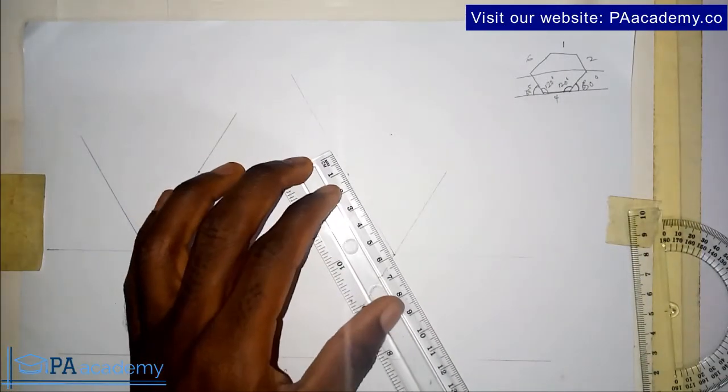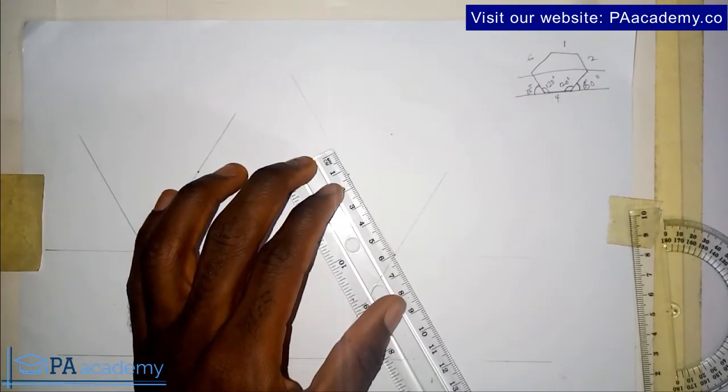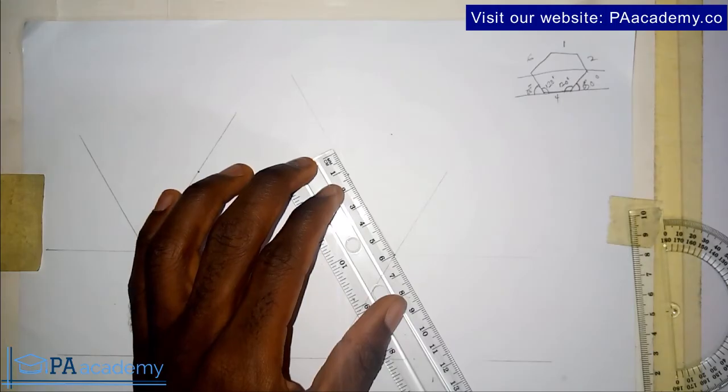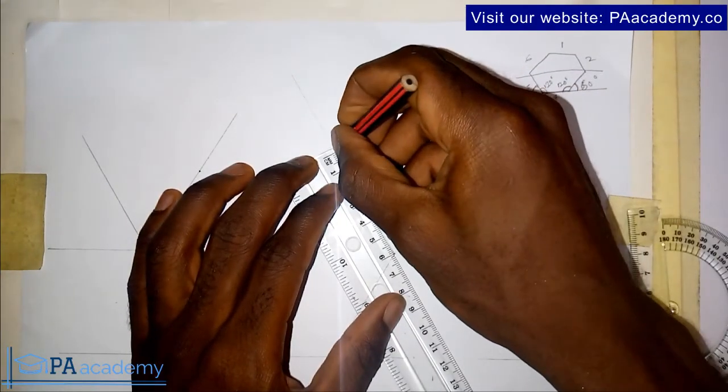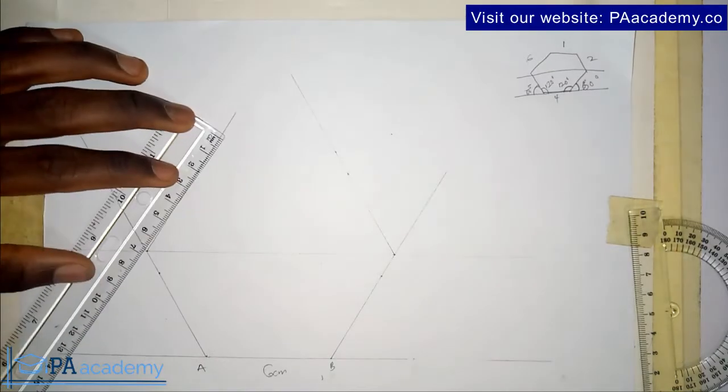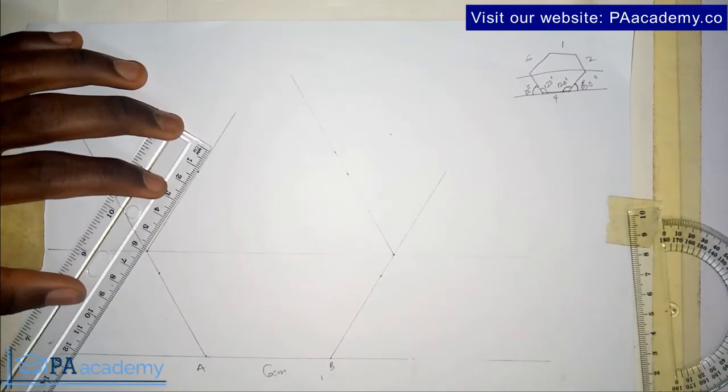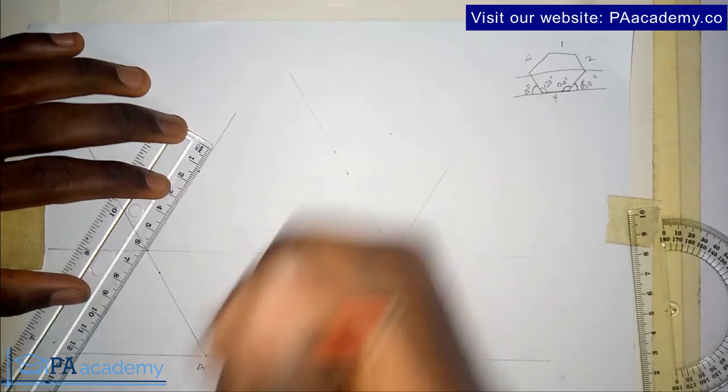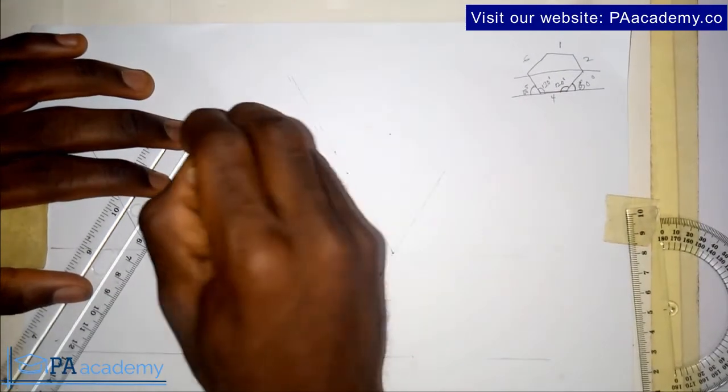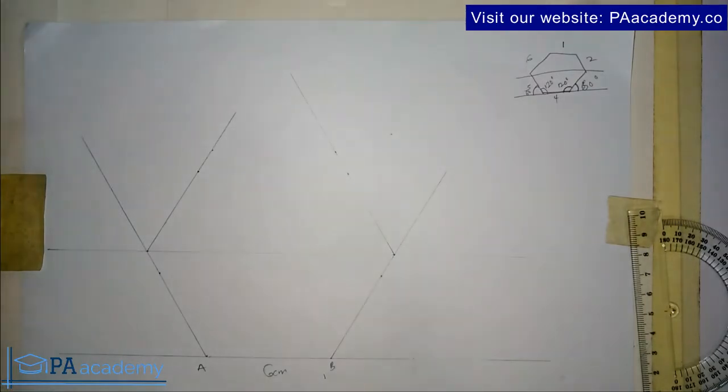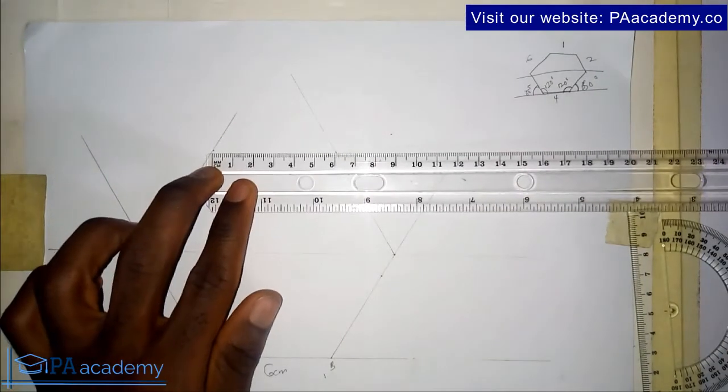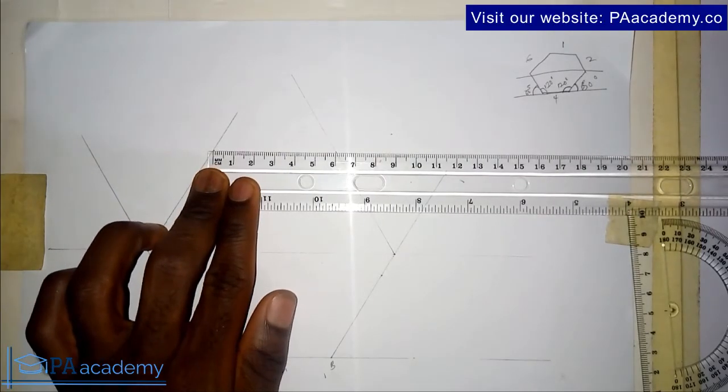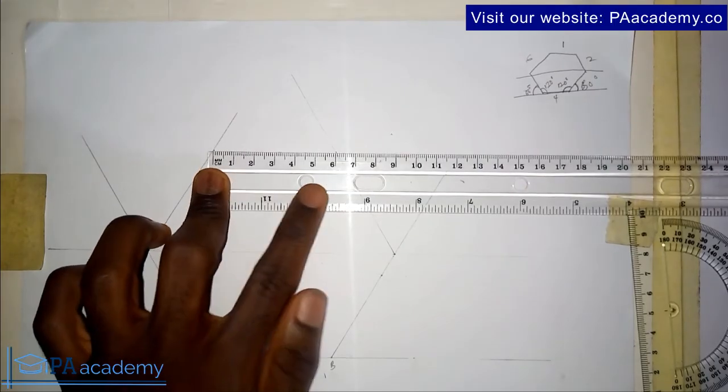Let me measure the 6 centimeters. This is 6 centimeters. For us to be sure, by the time we measure this it should also give us 6 centimeters. You can see. Let me join.